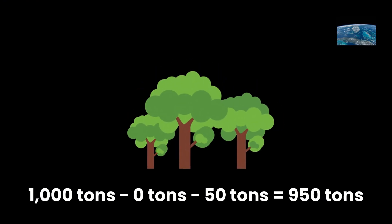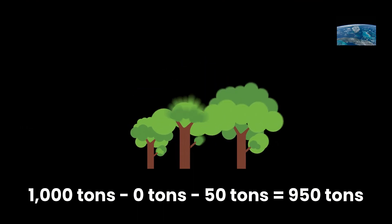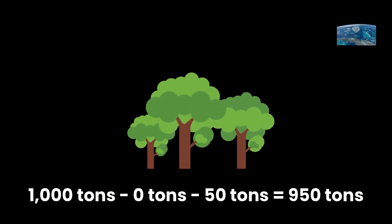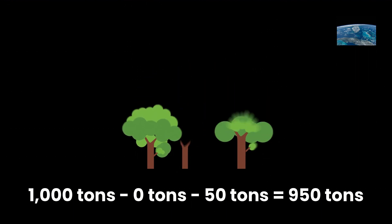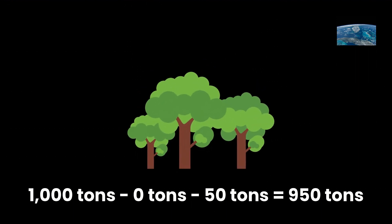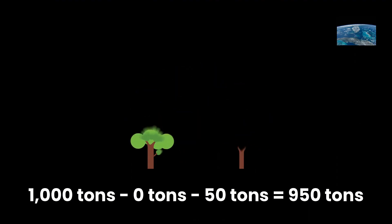So, here's how we crunch the numbers: take the project removals, subtract the baseline removals, and then subtract the leakage. In our case, that's 1,000 minus 0 minus 50, which equals 950 tons. This project generates 950 carbon credits.